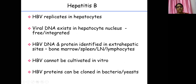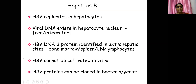Regarding pathogenesis: the virus replicates in liver cells. The viral DNA enters the liver cell nucleus and either remains free or gets integrated into the liver cell nucleus. In addition to liver cells, HBV DNA has been identified at extra-hepatic sites such as bone marrow, spleen, lymph nodes, and lymphocytes. Even though the virus cannot be cultivated in the lab, its proteins can be cloned in bacteria and yeast — which is how vaccines are prepared.